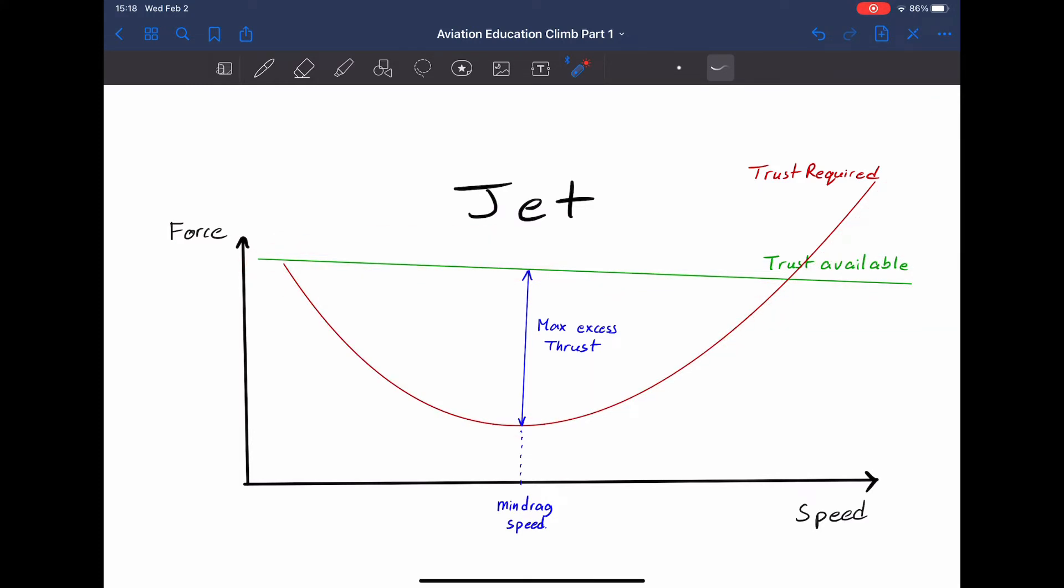The speed that gives you the best angle of climb is called VX. So, where would you get the maximum angle of climb on this current graph? Wouldn't it be where you have the least amount of drag? So, in a jet, your VX speed is also your minimum drag speed.